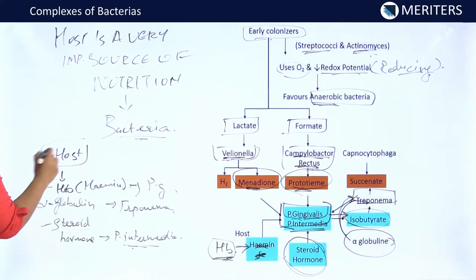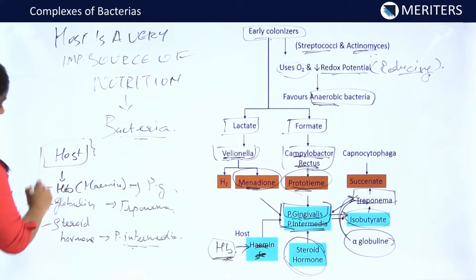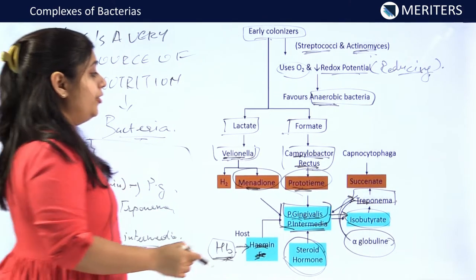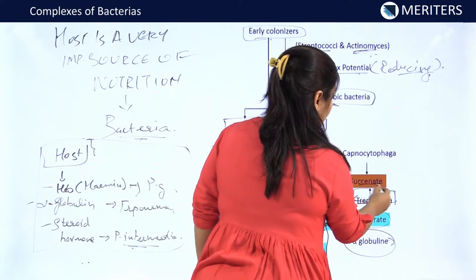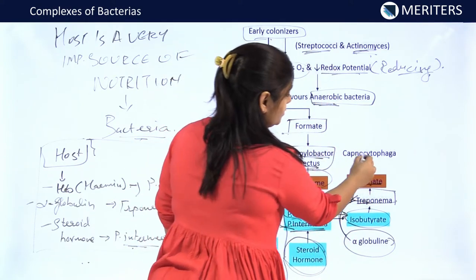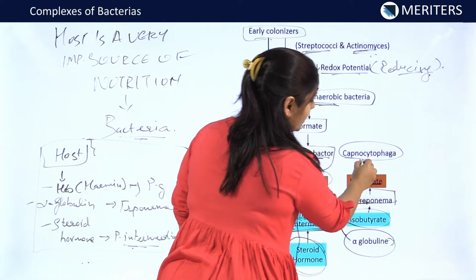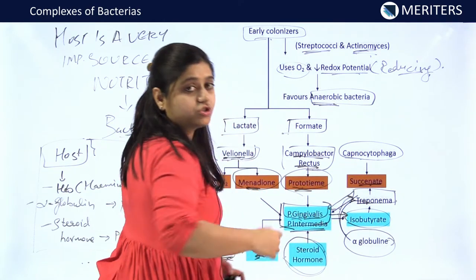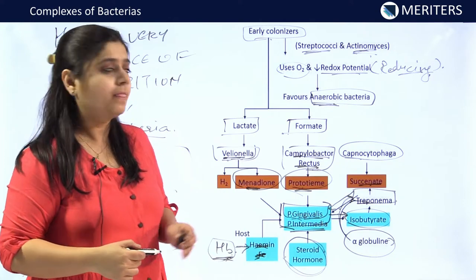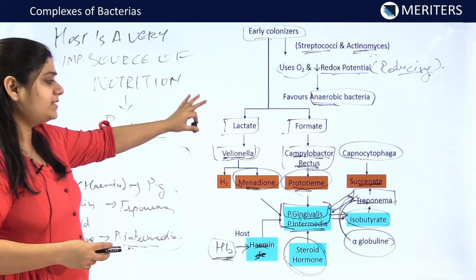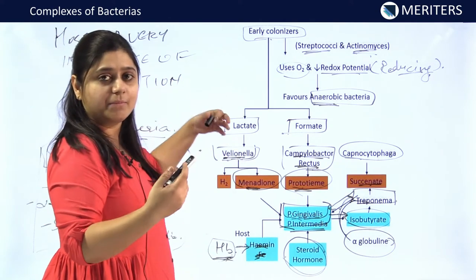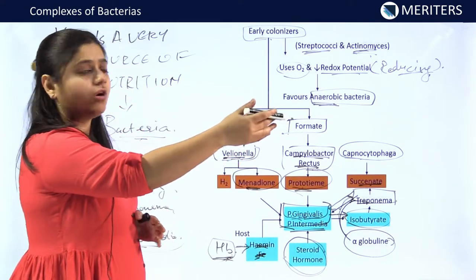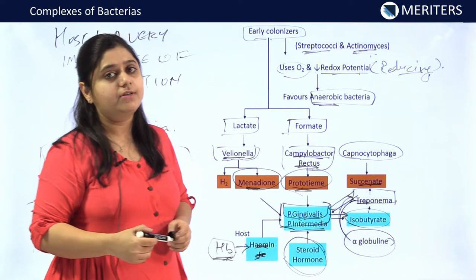Very frequently, MCQs from this portion are asked. Treponema produces succinate, and this succinate is also produced by Capnocytophaga bacteria, which is also a great nutrient source to P. gingivalis and Prevotella intermedia. This diagram is simplified and you can remember it to see what different metabolic products help in the growth of secondary colonizers in the oral cavity.